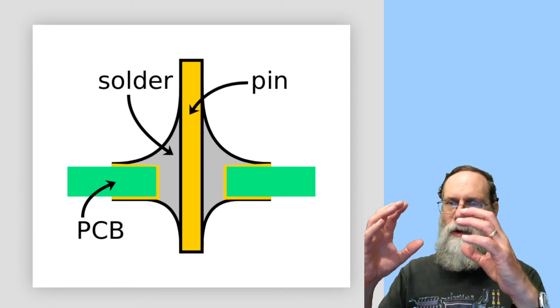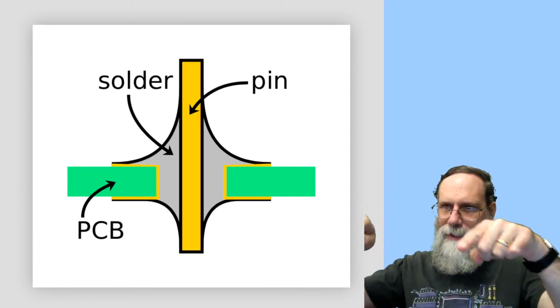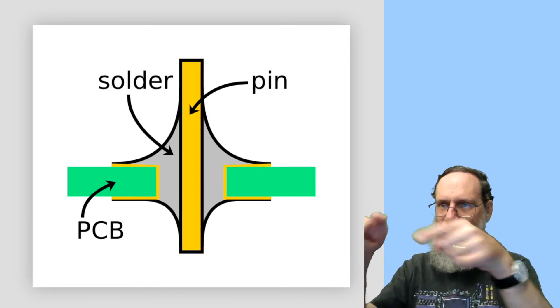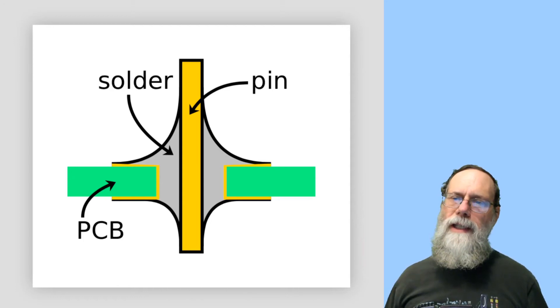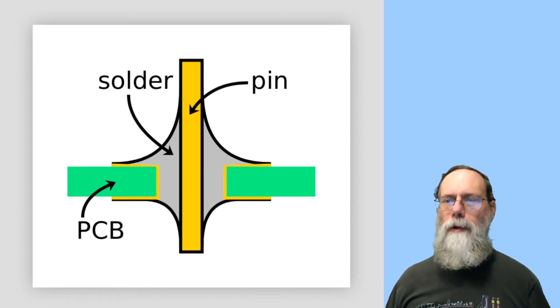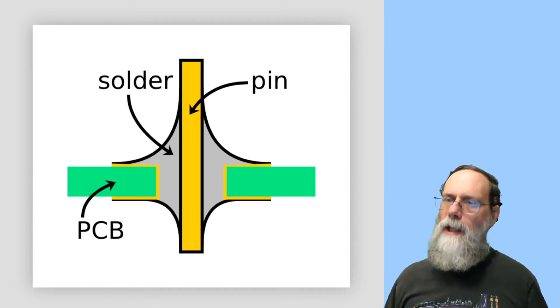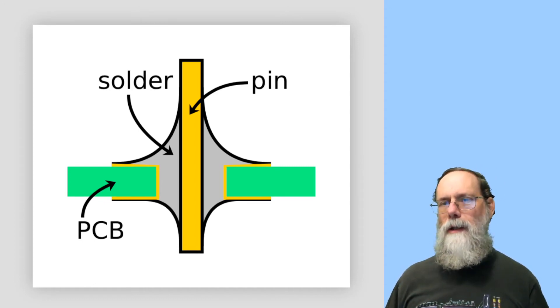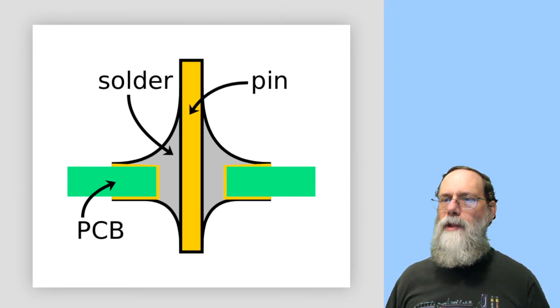If you've got a solder joint that is sort of a Hershey's kiss where it's got the right top shape but on the bottom it curves the wrong way so it curves in at the bottom, that indicates you didn't heat the pad enough or that the pad was dirty and the flux hadn't cleaned it. And so the solder did not wet the pad. The solution when that happens is to reheat the solder joint and make sure that the pad gets hot enough that the solder melts and flows into the hole properly.